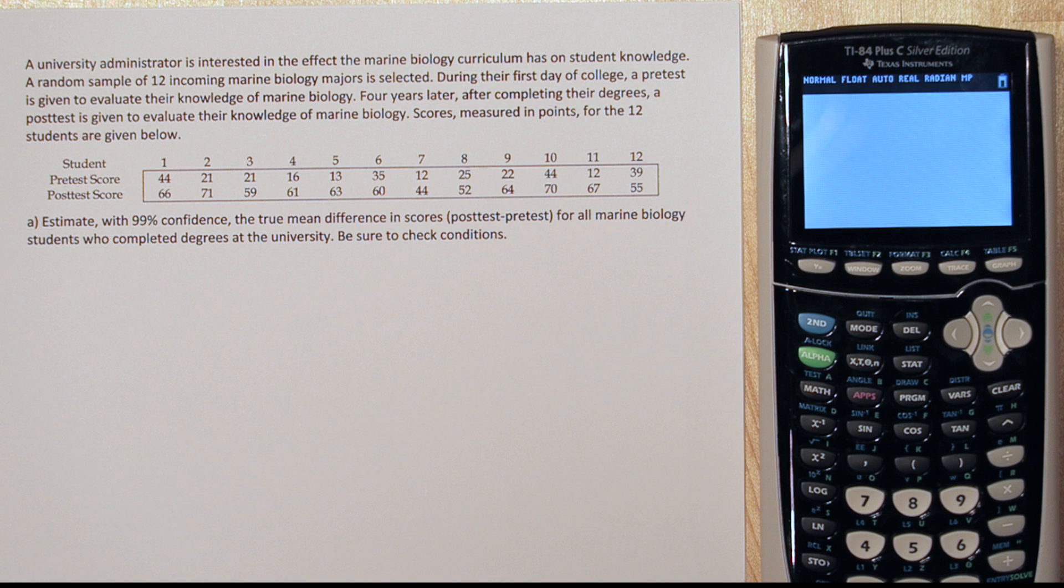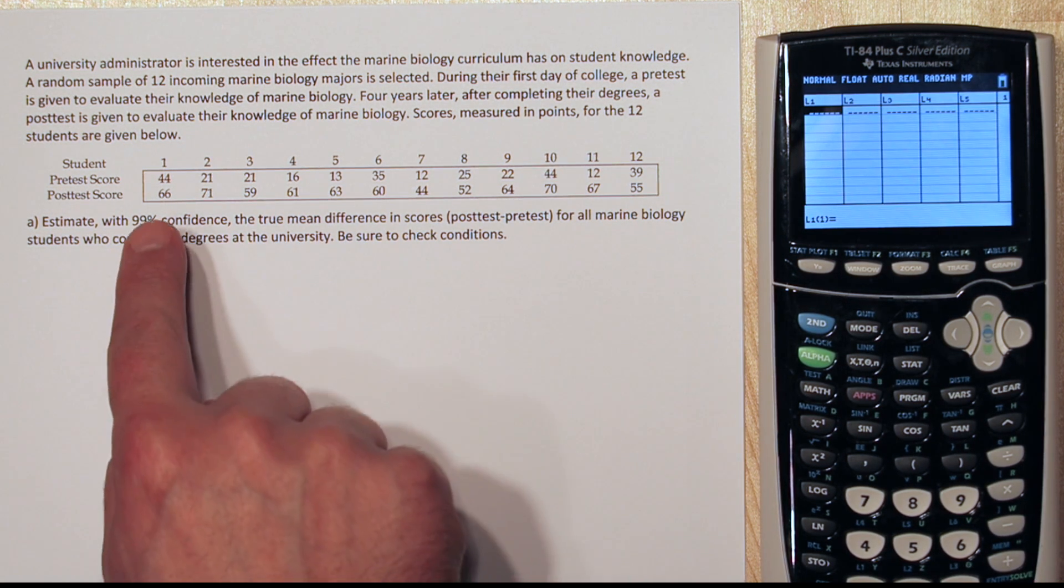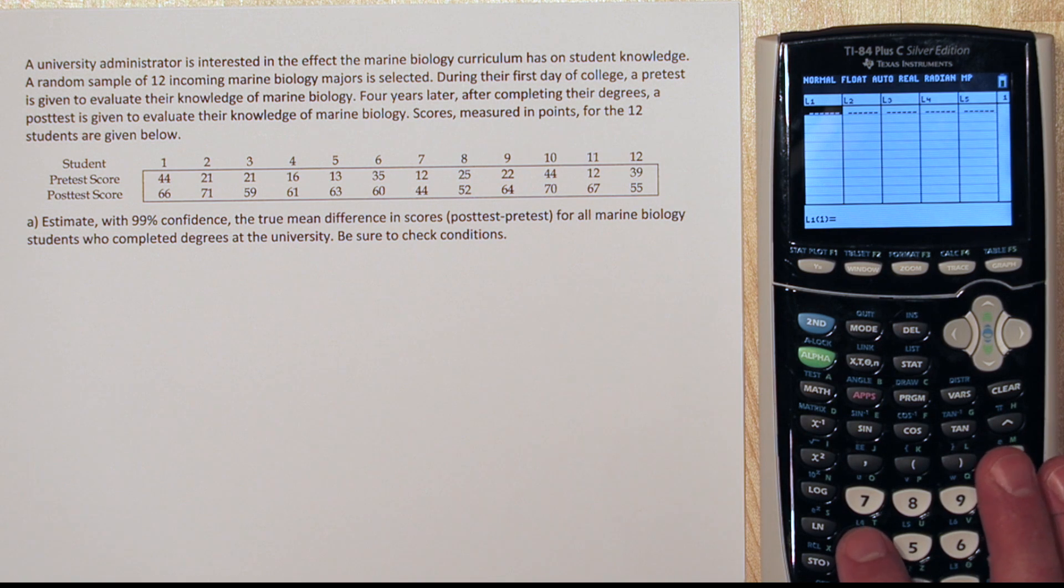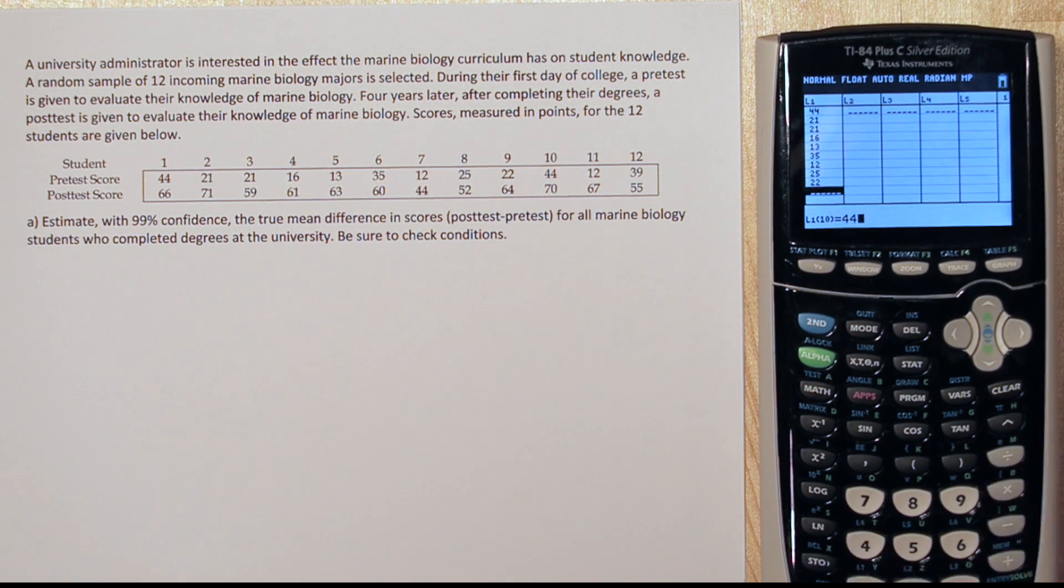So here's how to do this on the calculator. Start by pressing stat, then press enter on edit. In list one, we're going to type all the pretest scores. Now, press over to get to list two. Here we're going to type the posttest scores.